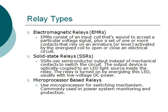Electromagnetic relay consists of an input coil that responds to a particular voltage signal, plus a set of one or more contacts that relay an armature or lever activated by the energized coil to open or close an electrical circuit.